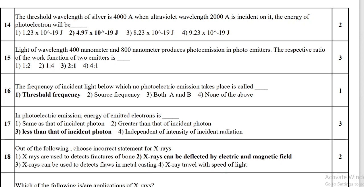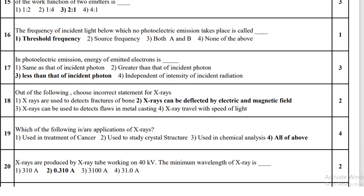The frequency of incident light below which no photoelectric emission takes place is called the threshold frequency. In photoelectric emission, the energy of the emitted electron is less than that of the incident photon.